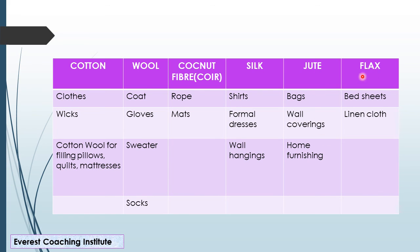Flax — the fiber's name is linen, spelled L-I-N-E-N. Uses of linen include bedsheets. These are all examples from the fiber types table, and I think this will be very useful.